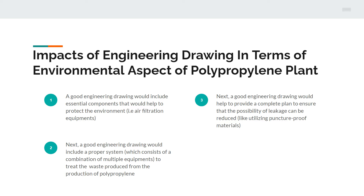A good engineering drawing would also help to provide a complete plan to ensure that the possibility of leakage can be reduced, such as by utilizing puncture-proof material. What I mean by this point is that during the manufacturing process of polypropylene plastic, in order to reduce the possibility of having a leakage, we can use puncture-proof materials, especially ones that can help to mitigate this particular negative impact.